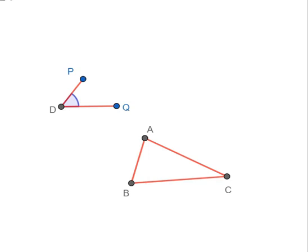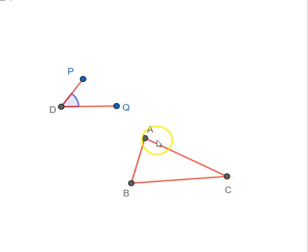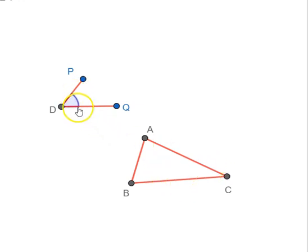Euclid's 42nd proposition says that we can construct a parallelogram whose area is equal to the area of a given triangle, with one of its angles being equal to a given angle. What's the first step going to be? This is going to be pretty involved, so I'm going to draw something and then hide it so that the diagram doesn't get cluttered up.